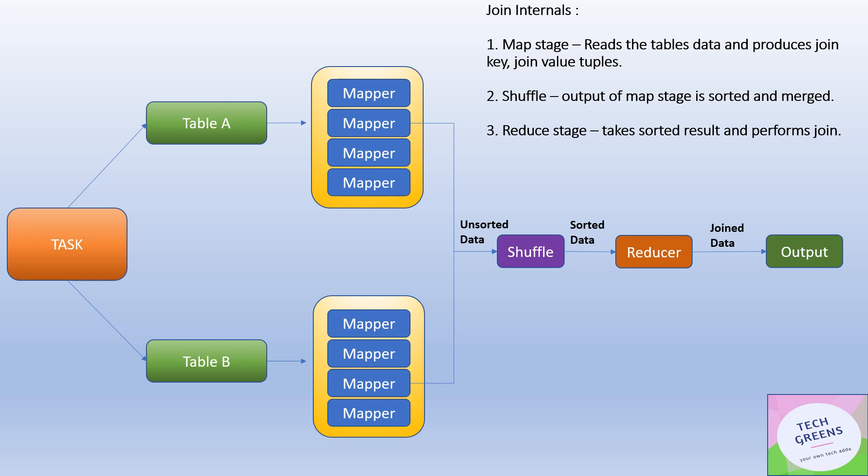The key-value pair tuples produced from the mapping stage will go to shuffle. The data coming out of the mapping stage is unsorted, then shuffle will do the merging and sorting, and this merged and sorted data will be given to the reducer as input, which will perform the join and produce the output. So you have both stages here: the map stage and the reduce stage, with a shuffle in between.